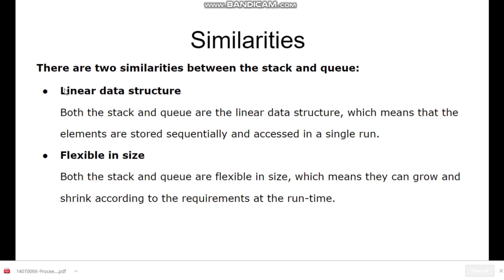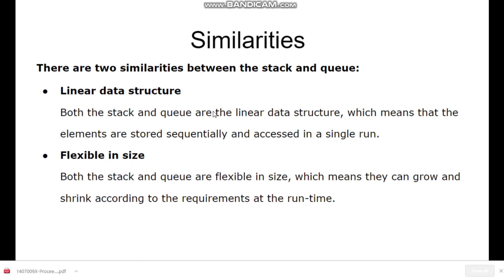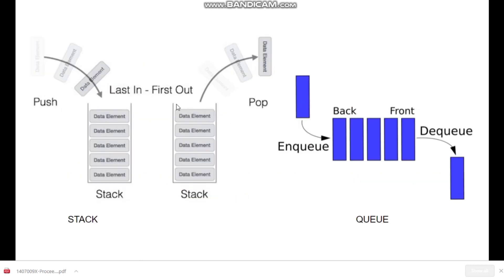There are two similarities between stack and queue. The first is linear data structure. Both the stack and queue are linear data structures, which means that the elements are stored subsequently and accessed in a single run. Both stack and queue are linear data structures where all the elements are stored in sequence order.